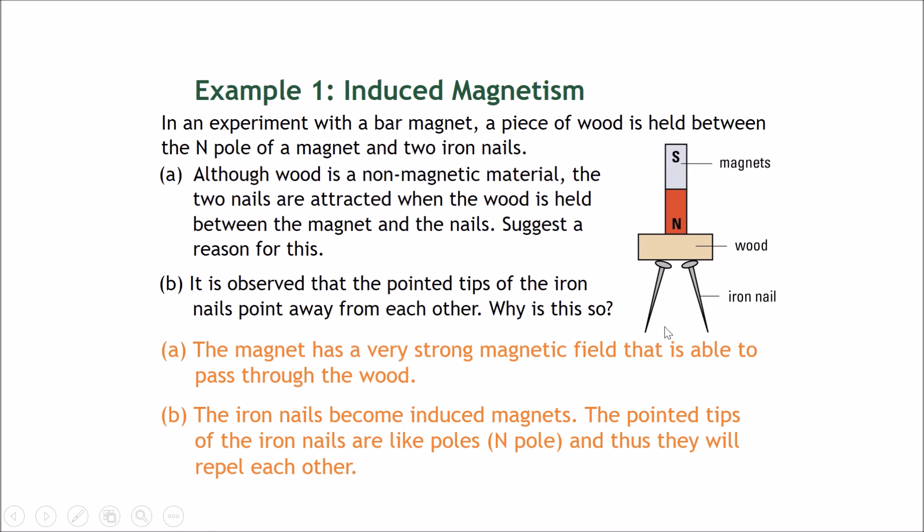Therefore, at first, imagine these two pins were hanging straight. There will be a north pole here and north pole here. Therefore, these two will be like poles, and they would repel each other. That's why these two nails point away from each other—because their ends repel each other.